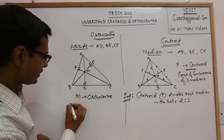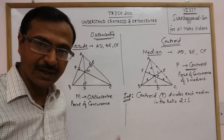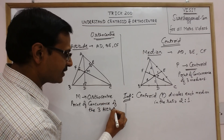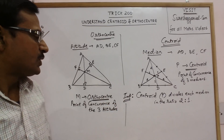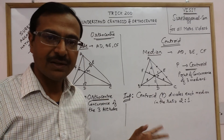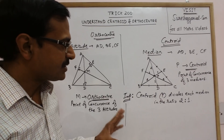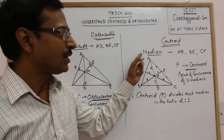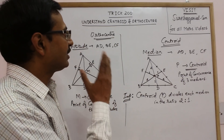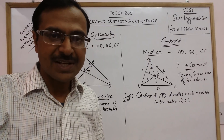So orthocenter is the point of concurrence — where two or more lines intersect — of the three altitudes, and it is called the orthocenter. These are very important concepts used in geometry and competitive exams. Students at the basic level of classes 6, 7, and 8 study these concepts when first learning the properties of triangles. Remember: medians constitute the centroid and altitudes constitute the orthocenter. For more videos, watch the subsequent videos in this geometry series. Keep sharing and subscribe to the channel if you like it.